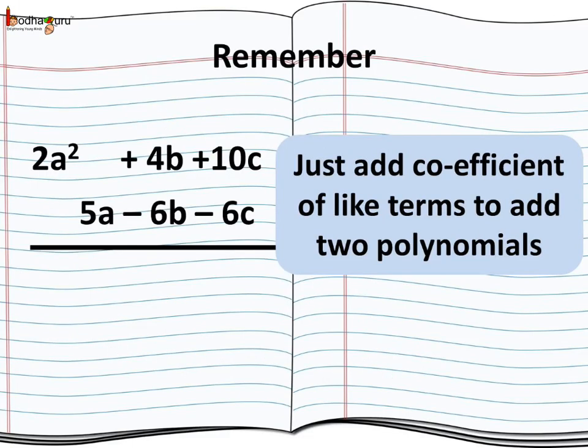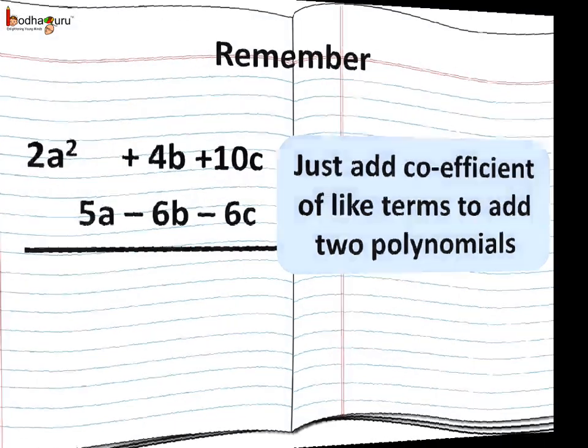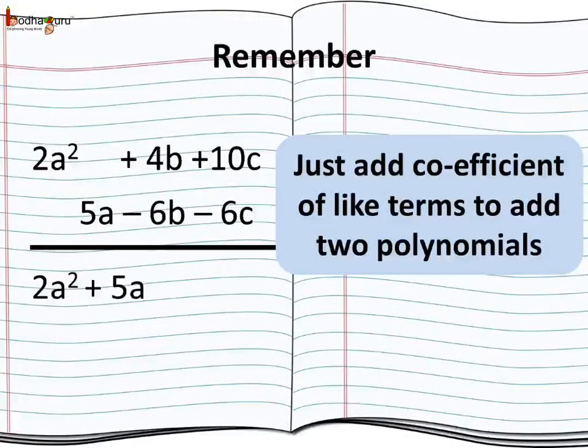So let us revise what we learnt about the addition of polynomials. When we add two polynomials, we add the coefficients of the like terms. To make it easier, we can write the like terms one below other. Like here, we are going to add 2a² + 4b + 10c with 5a - 6b - 6c. We wrote every term under its corresponding like term only. Now just add the coefficients of the like terms. 2a² doesn't have any like term to add with. So we just write it in the answer. Same way 5a doesn't have any like term to add with. So we will write it as is.